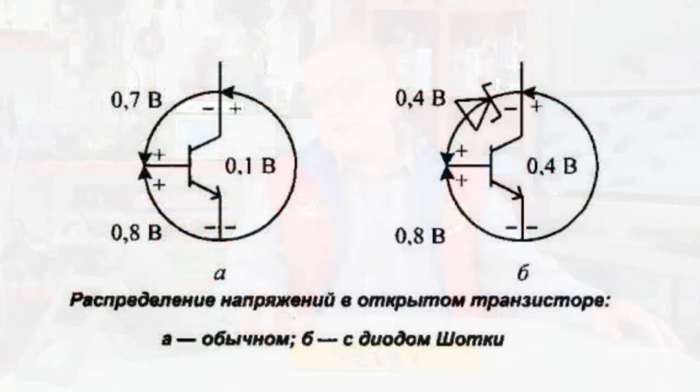In comparison with silicon diode, a direct voltage drop in Schottky diodes is less by half, about 0.3 to 0.4 volts.